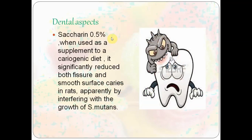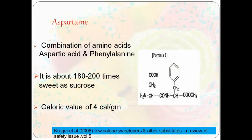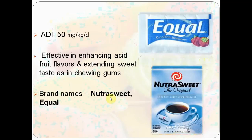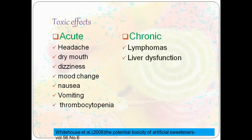Regarding the dental aspect of saccharin, at 0.5% concentration it can significantly reduce both fissure and smooth surface caries. The second sweetener is aspartame, which is approximately 200 times sweeter than sucrose. It is a combination of aspartic acid and phenylalanine, with a caloric value of 4 calories per gram, sold under brand names NutraSweet and Equal. Toxic effects include acute effects such as dry mouth, dizziness, nausea, and vomiting, and chronic usage may cause lymphomas and liver dysfunction.